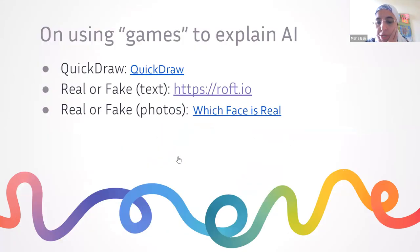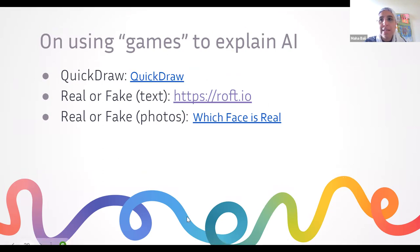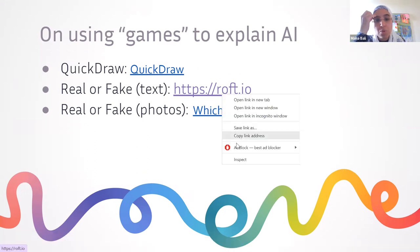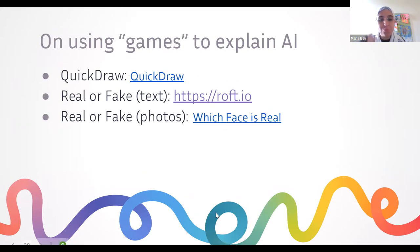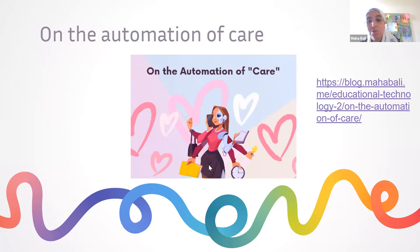When I introduce AI to my students, I want them to understand how it works and how it learns. I usually play a game called Quick Draw — if you've never tried it, you should. It helps you understand how pattern recognition AI works, which is different from the language model type. There's also a game to detect whether text is fake or real, and another to figure out whether a face is real or AI-generated — quick and fun ways to introduce AI in class.